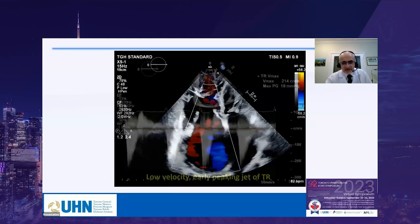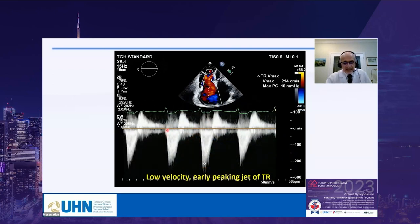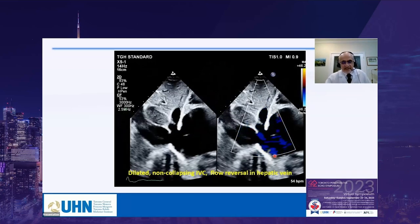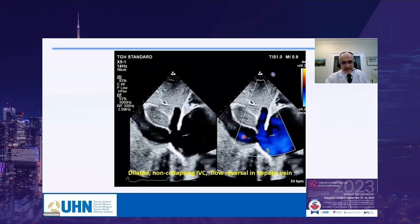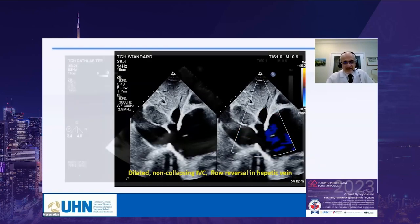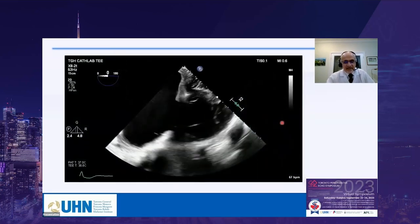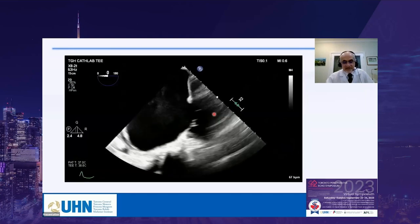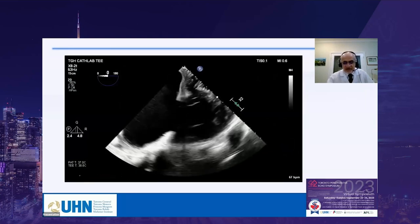The Doppler profile of severe TR shows an early-peaking, triangular-shaped waveform with relatively low velocity, because the pressure difference between the RV and RA is not large in severe TR. The IVC is dilated and there is flow reversal in the hepatic veins. In this case, the transthoracic echo showed the tricuspid valve much better than TEE, where the leaflets were not well visualized.